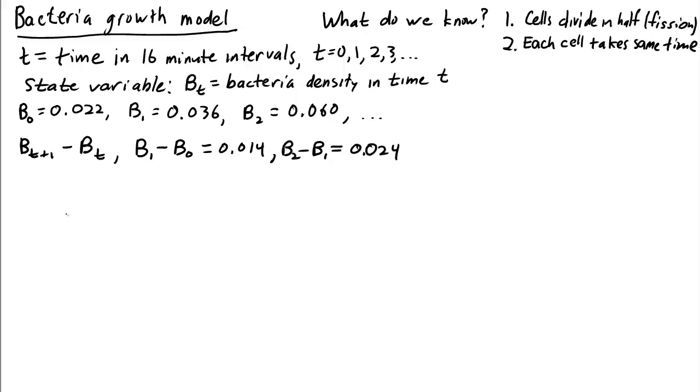Okay. How are we going to write down a mathematical model or a dynamical system model that captures this data? We want to write a model of the form b sub t plus 1 minus b sub t equals something, right? This is the change. Well, let's go back to what we know about how the bacteria population grows.